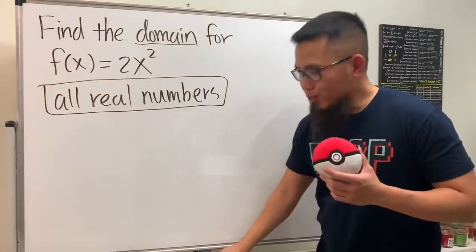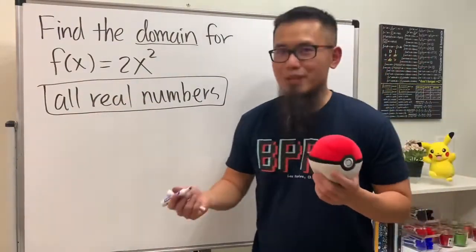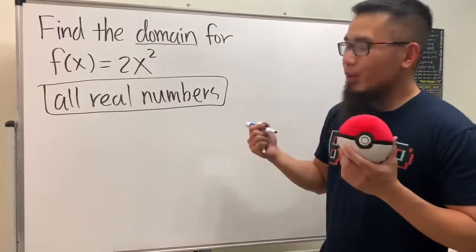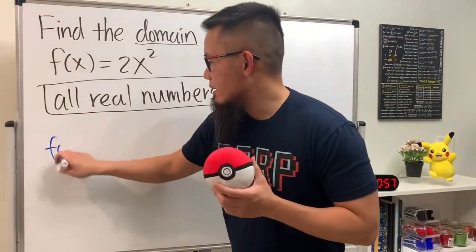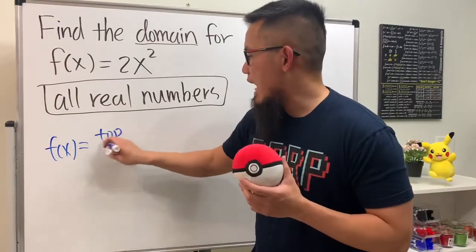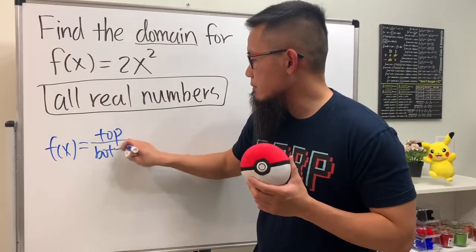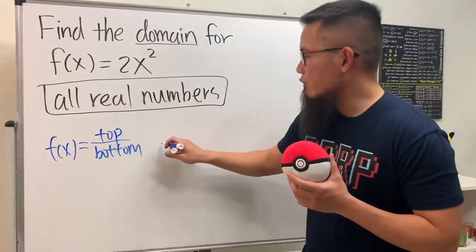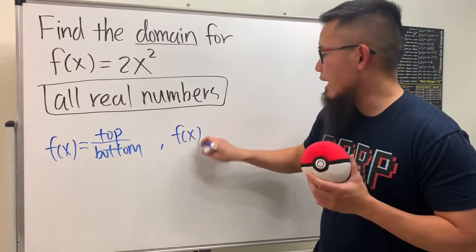I also want to use this opportunity to remind you guys the following. If you want to find the domain, if you have the function in terms of a rational function, meaning like a fraction with the top over the bottom, and also if you have another function, let's say you have the square root function and you have the x inside of the square root.